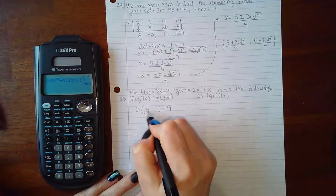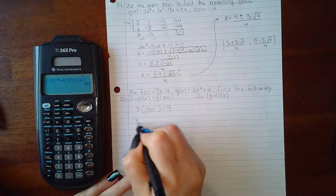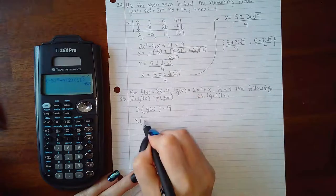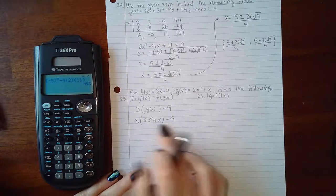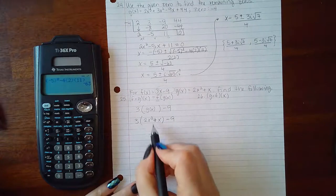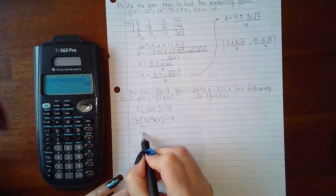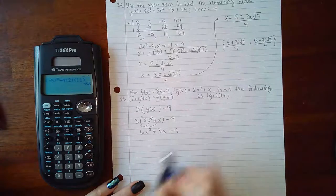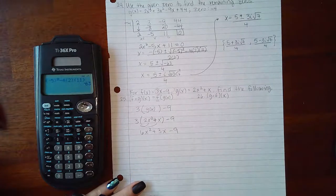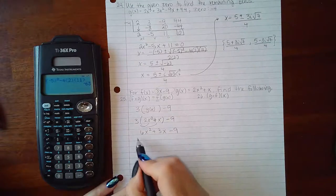But what is g of x equivalent to? G of x is equivalent to 2x squared plus x. So this is what I need to simplify. If I distribute my 3 I will get 6x squared plus 3x and the minus 9 will come down. That is as far as I can simplify it since there are no more like terms.